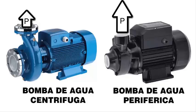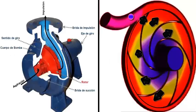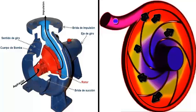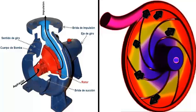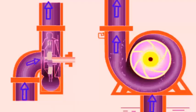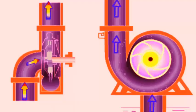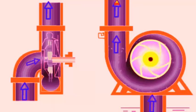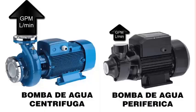In contrast, the centrifugal pump transfers energy to the fluid in a single pass without internal recirculation. This design prioritizes flow rate, but generates less pressure per unit of supplied energy.